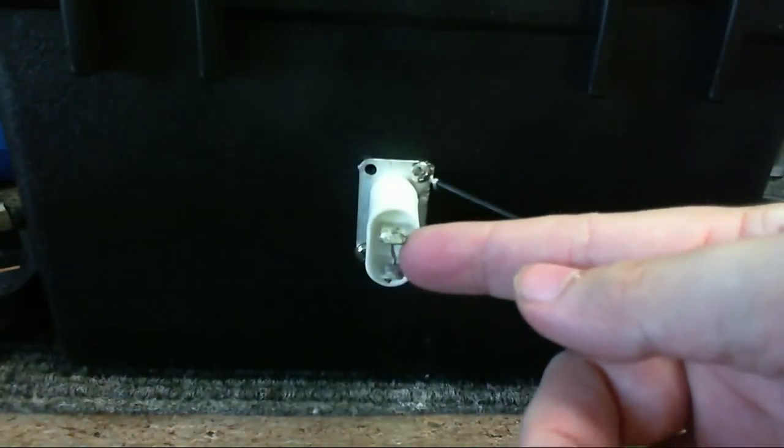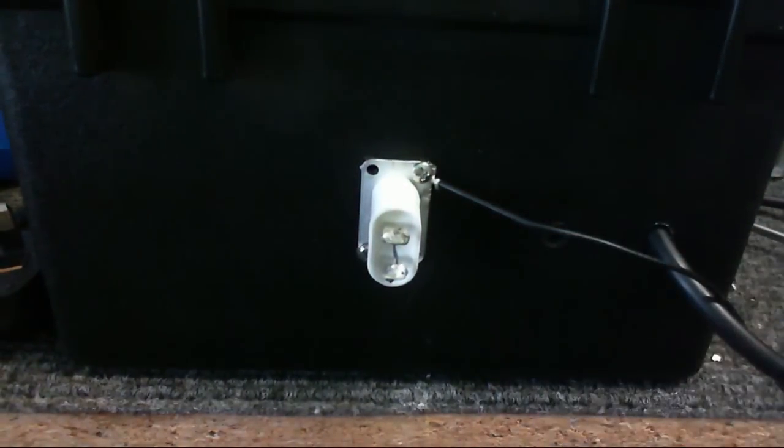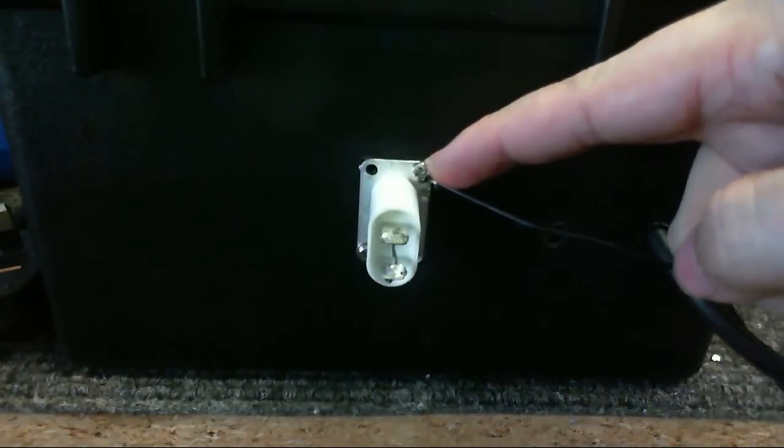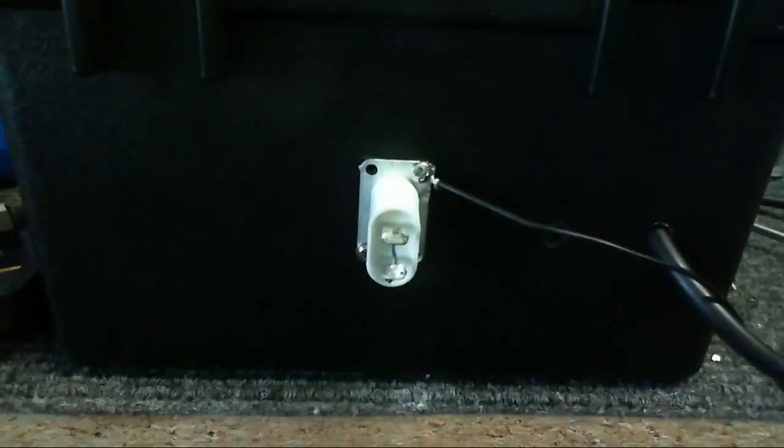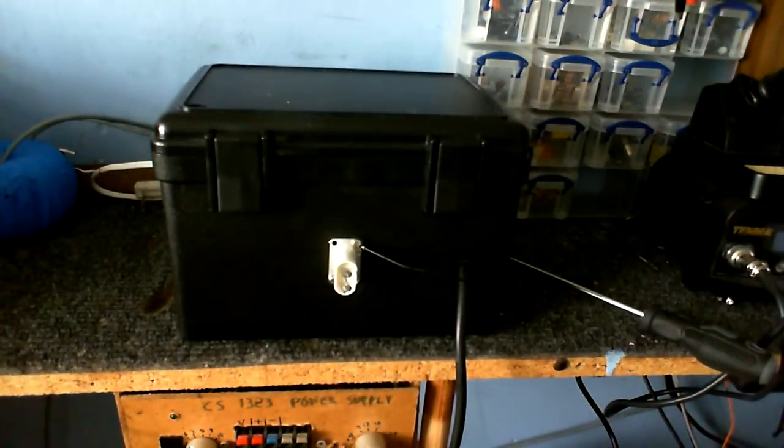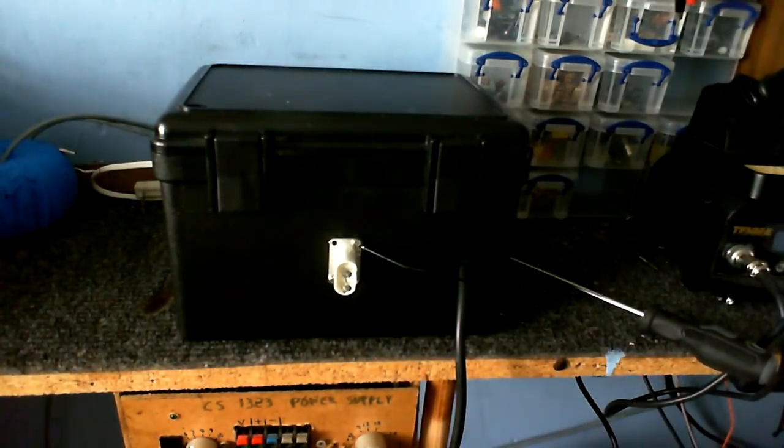I've shorted these two terminals together, so we get about 700 picofarads of capacitance there. So this is the ground, this is the high voltage output, and another good thing is that the capacitance is going to stop any high frequencies getting back into the power supply and blowing up the diode. There it is, the high voltage power supply for the Tesla coil. It's very simple.